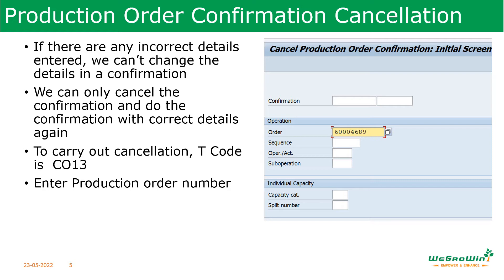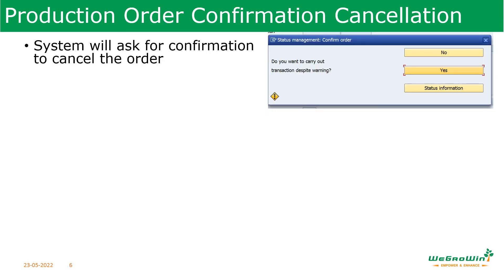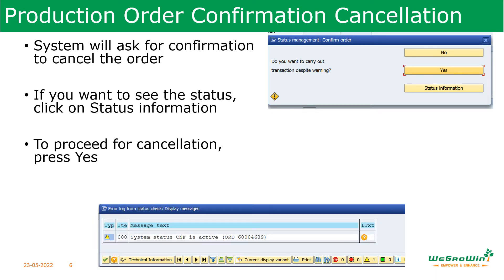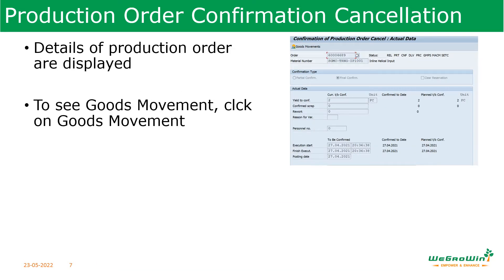To do the cancellation, use transaction code CO13. Once you enter CO13, the screen will appear. Enter the production order number. The system will ask for confirmation to cancel the order. You can also click on the status information icon, and the system will show the details. Then, to proceed with the cancellation, press Enter and proceed. The details of the production order are displayed. If you want to see the goods movements, click on the goods movement icon.